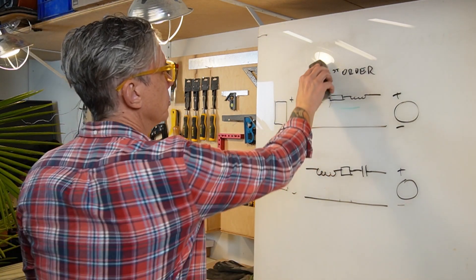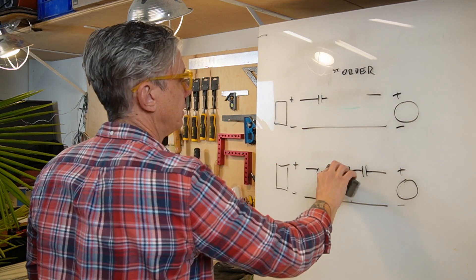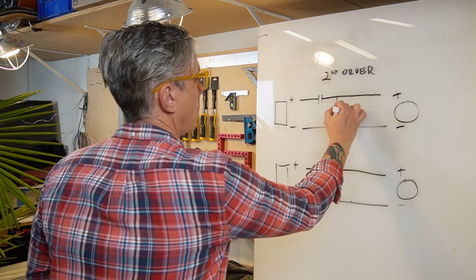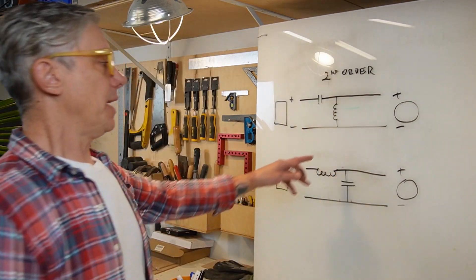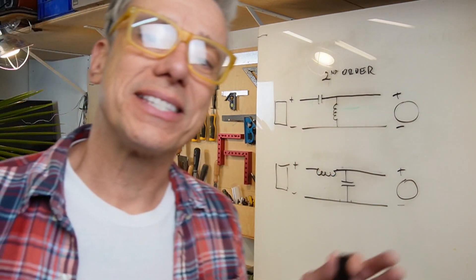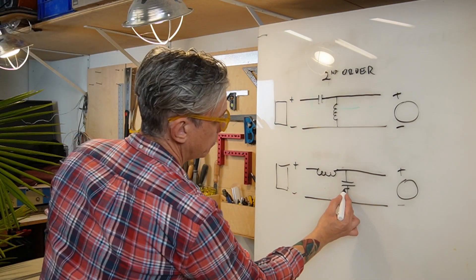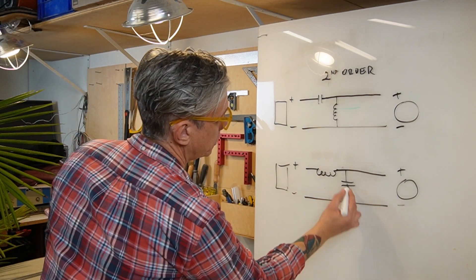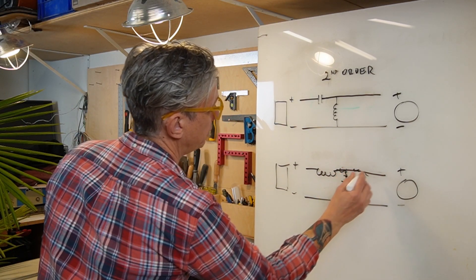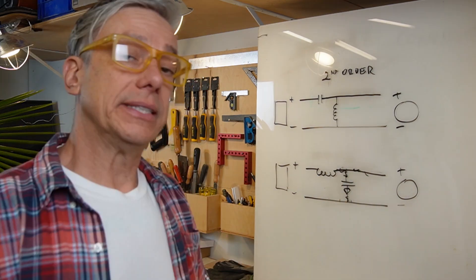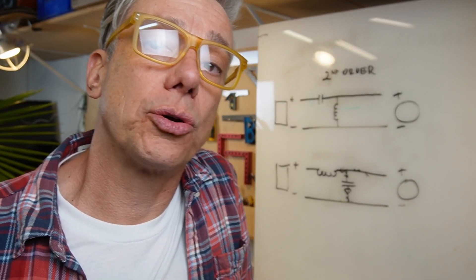Now we're going to go to second order. Let's say we add a coil in parallel — now we have a second order filter. It doesn't matter if I add more stuff in series or in parallel around it; what defines it is that we have one component in series and one in parallel. This is a second order crossover.